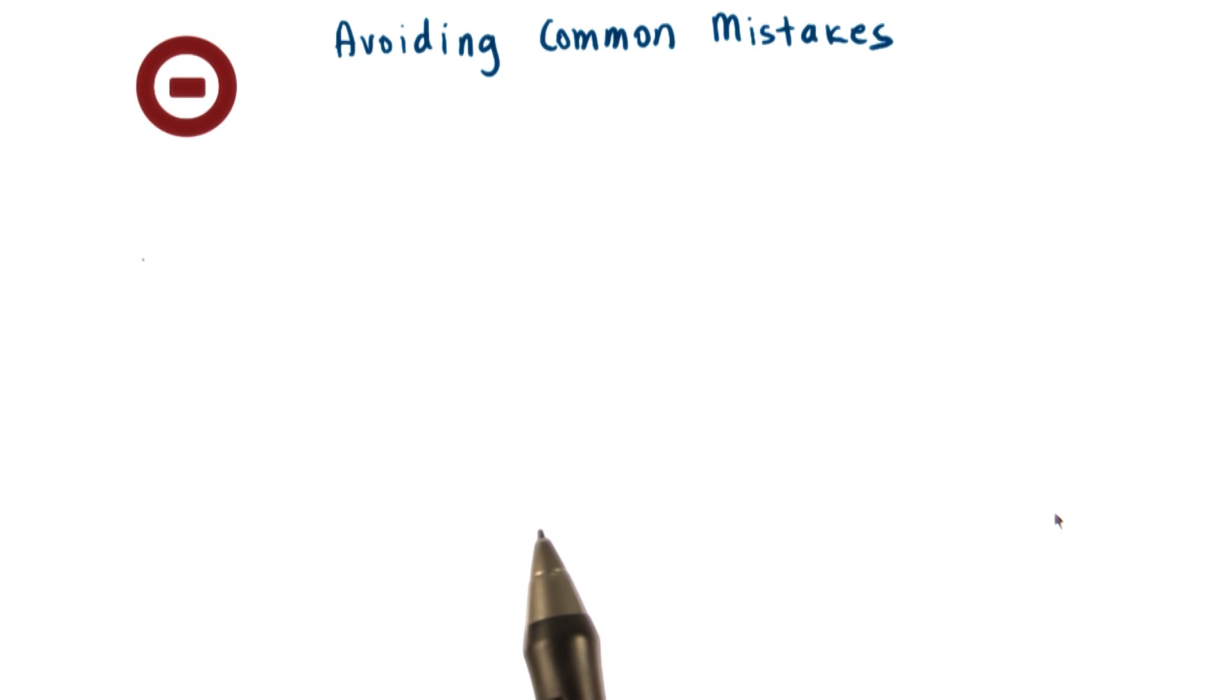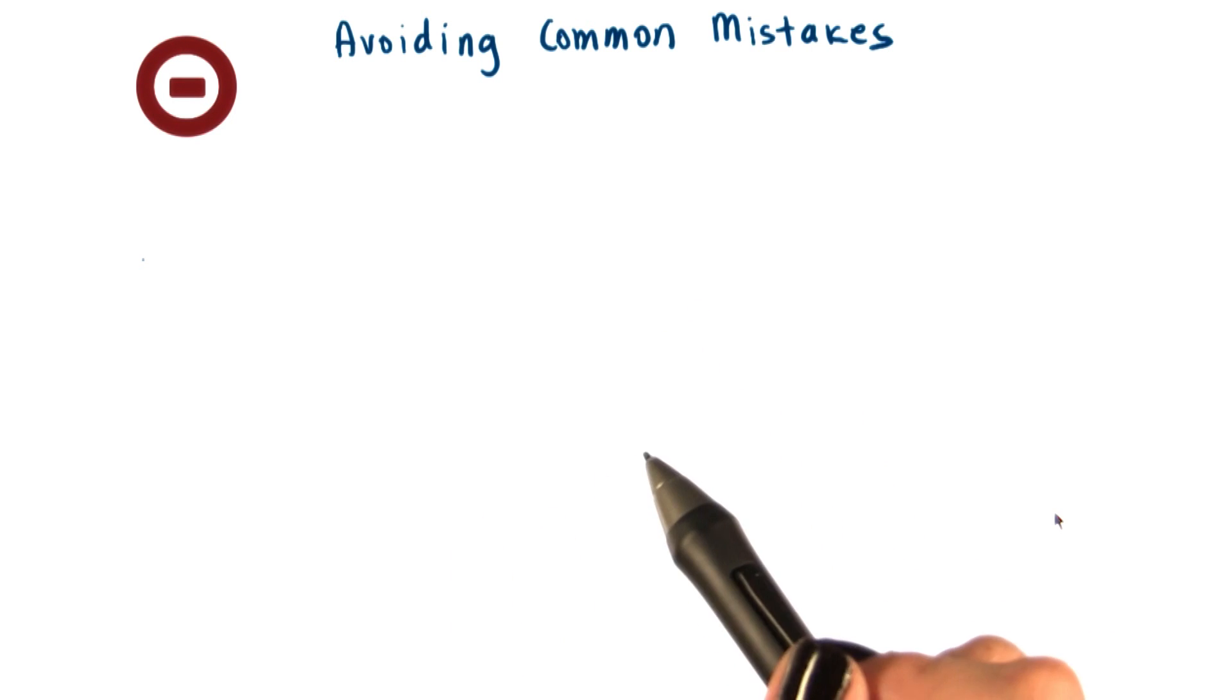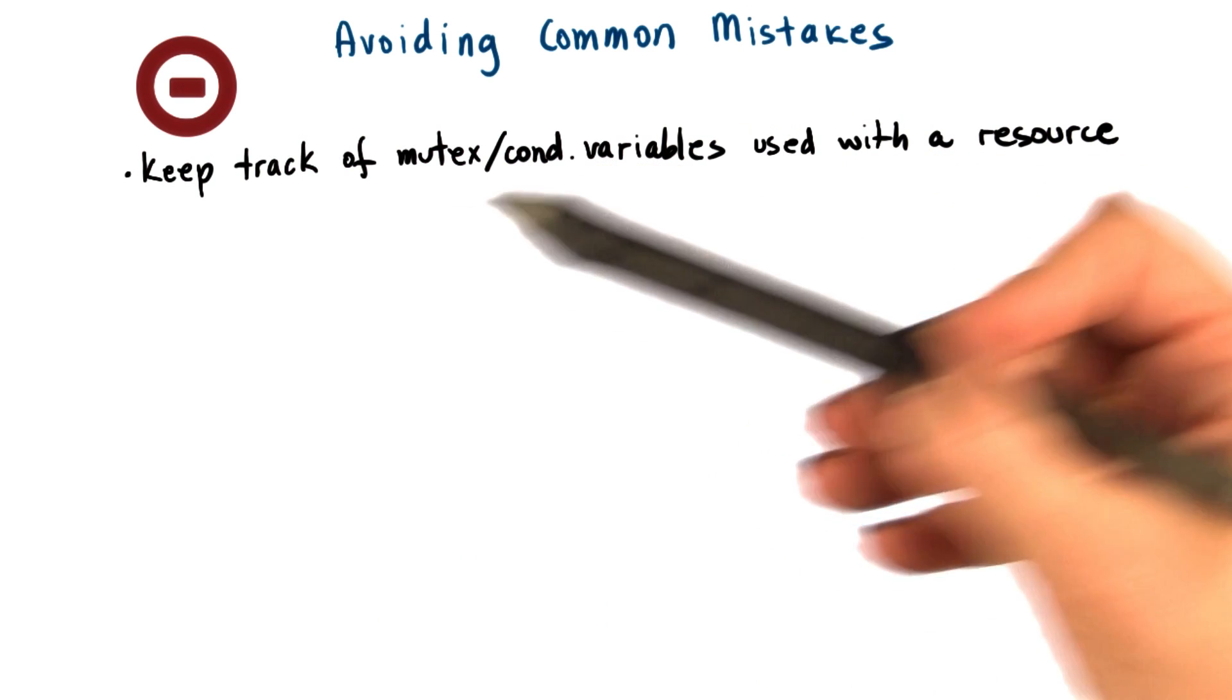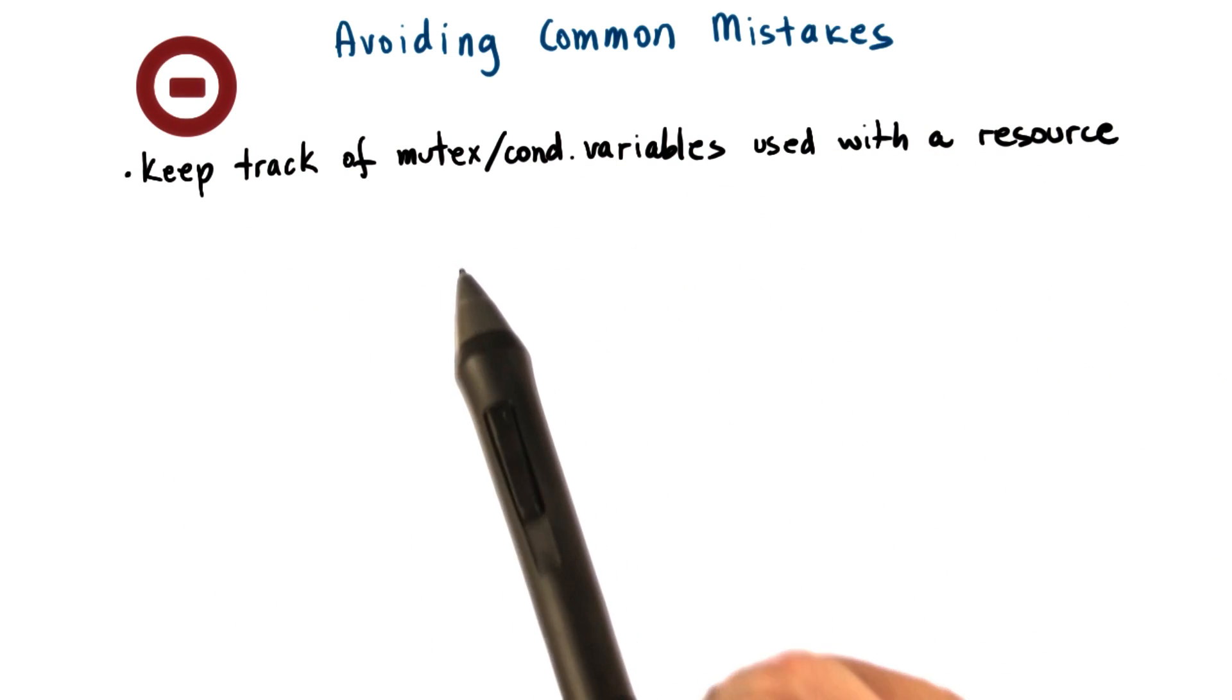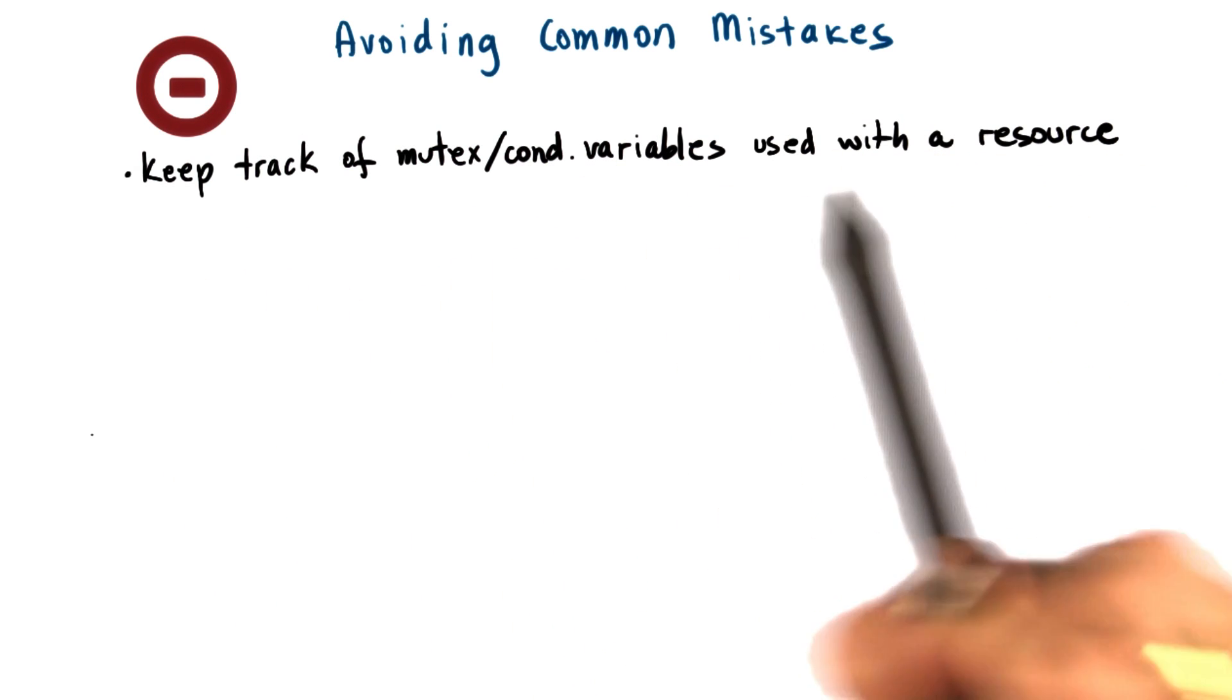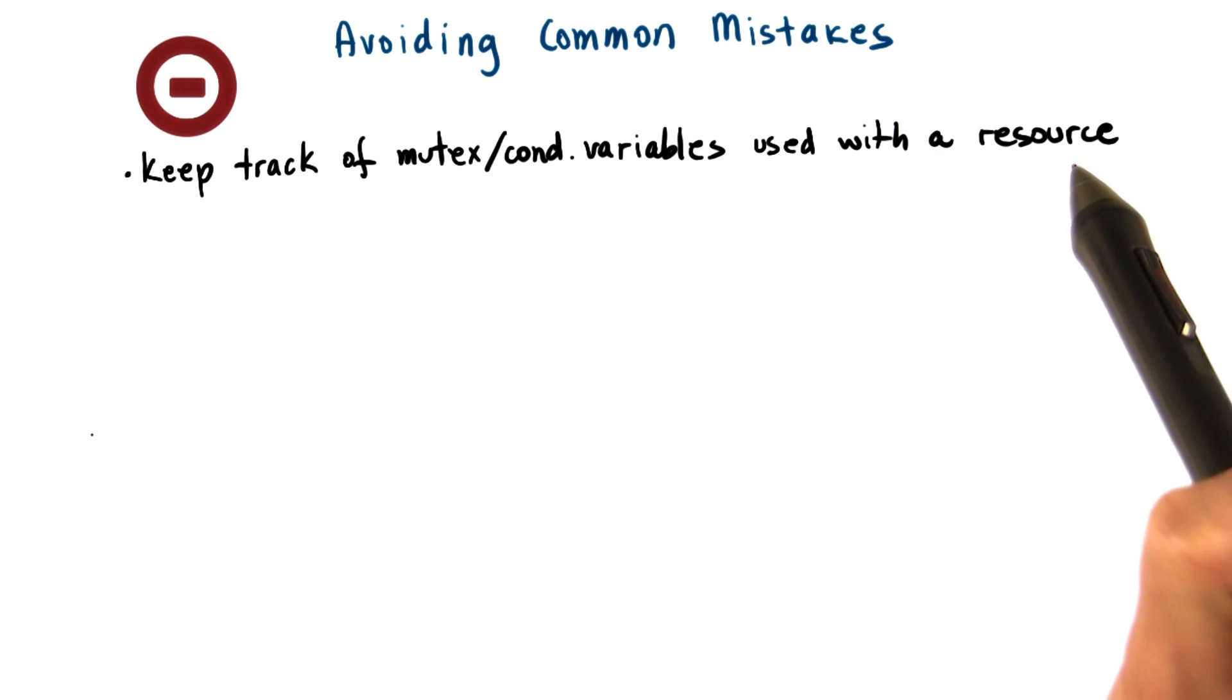Now let's look at some frequent problems that come up when writing multithreaded applications. First, make sure to keep track of the mutex and condition variables that are specifically used with a given shared resource.